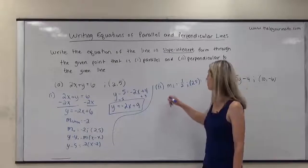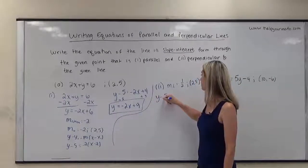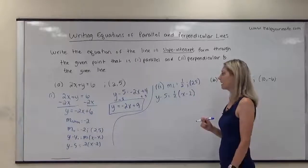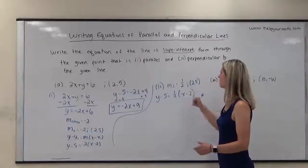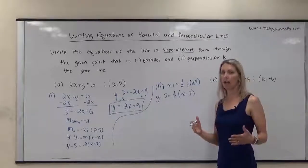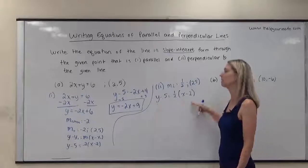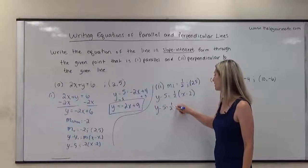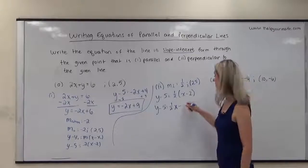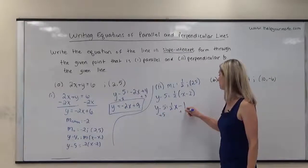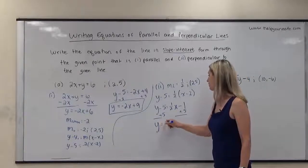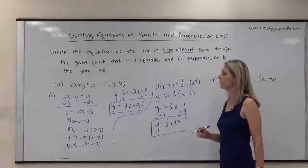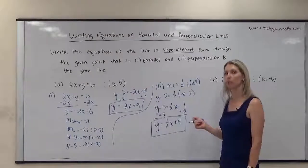Again using point-slope form: y minus 5 equals one-half times (x minus 2). The problem requires slope-intercept form, so I'll distribute and isolate y. Distributing: y minus 5 equals one-half x minus 1 (since one-half of 2 is 1). Adding 5 to both sides gives y equals one-half x plus 4. This is the equation of the line perpendicular to 2x plus y equals 6 that passes through (2, 5).